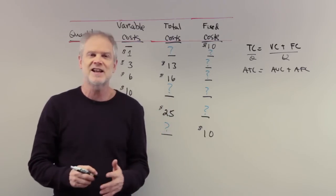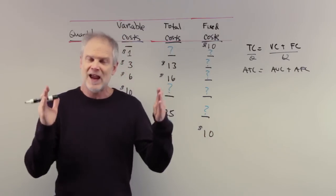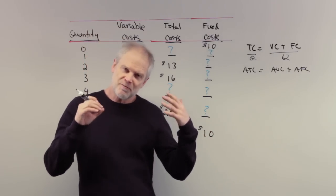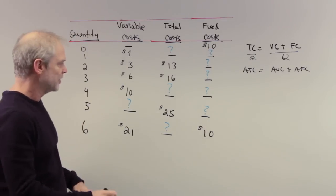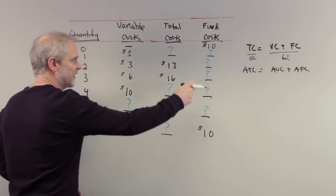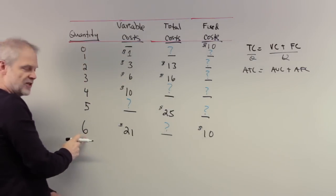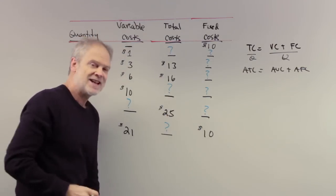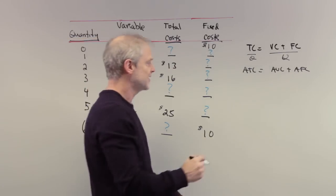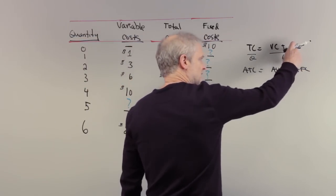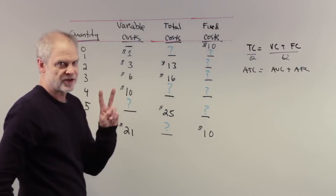Fixed costs don't vary with output. We know the fixed costs are $10 when you produce nothing and $10 when you produce six units. Average fixed cost is simply fixed cost divided by Q, which is $10 divided by 5, which is $2. So your first answer is B.